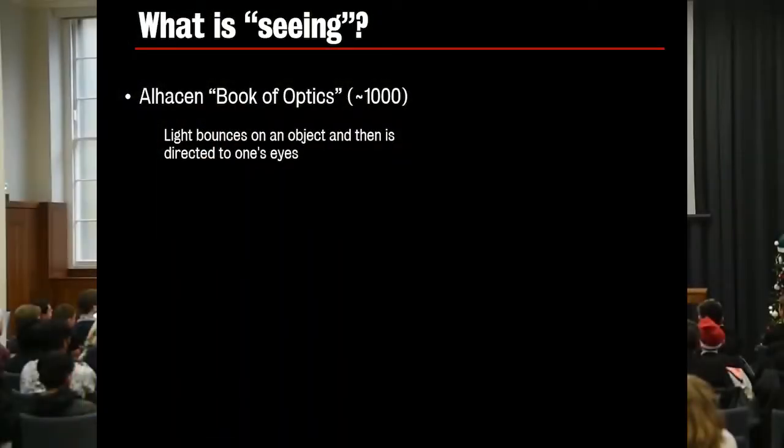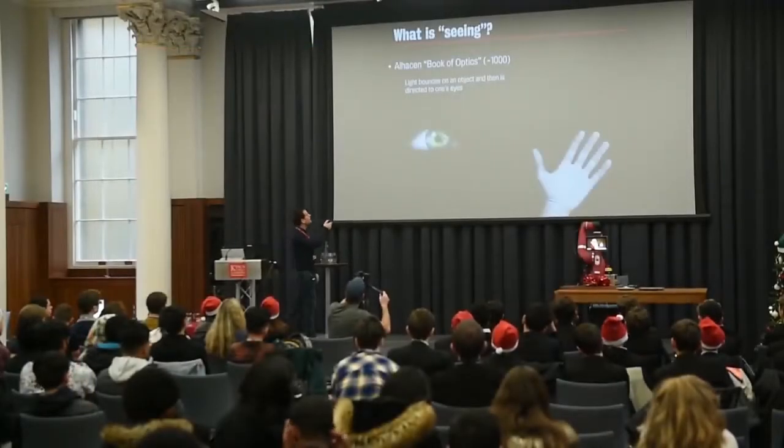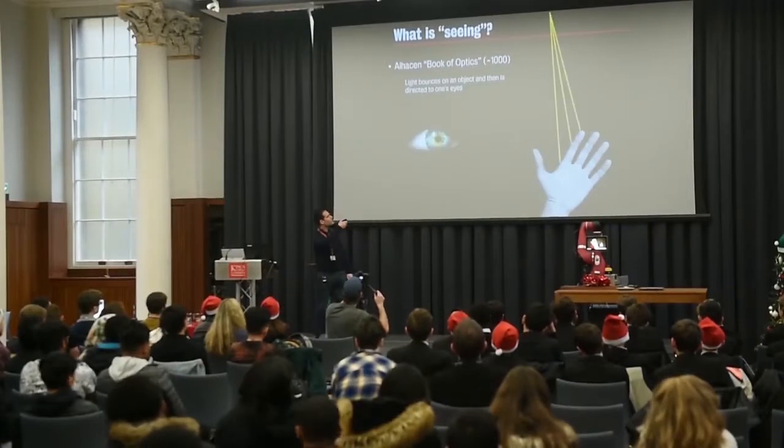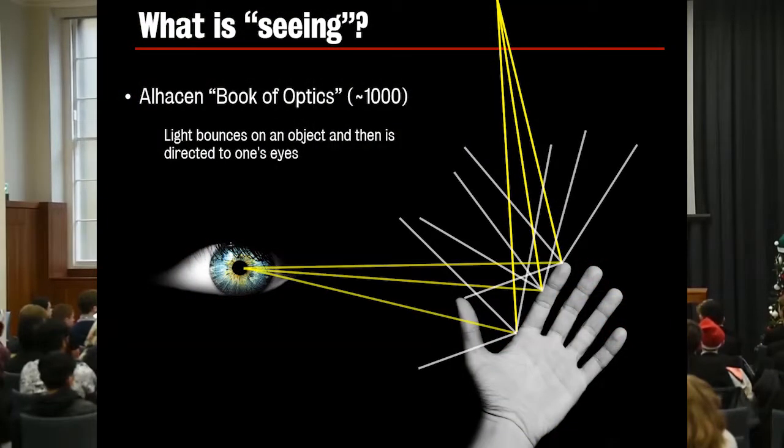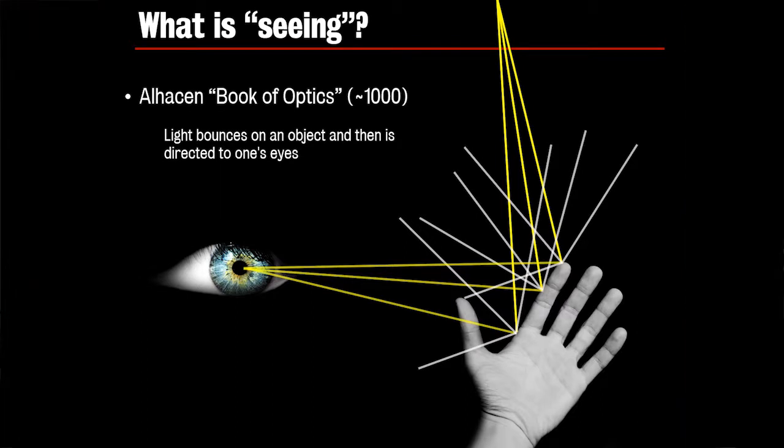So seeing means that light from somewhere is bouncing on my hand and then going into your eyes. And this is not easy. It was only found in the year around a thousand in the book of optics when they explained this. So light comes from somewhere, light travels in straight lines, it reflects, and part of those reflections goes into your eyes. And that's how you see.